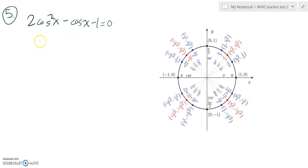So what I could do is try and factor this. I'm going to think of it as just like if it was 2a² - a - 1 = 0, where a just happens to be cosine of X.